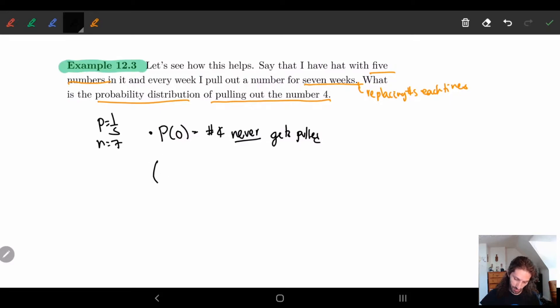The chance of four never getting pulled. Well, it's just the chance one over one minus five, seven times, right? So this is just four-fifths to the seven, because it's basically saying don't choose four seven times in a row. They're all independent events. There's a four-fifths chance for each one of these occurring. And so we get four-fifths to the seventh. And this gives us roughly 0.2097152. So already we know there's a roughly 21% chance that the number four will never show up in seven weeks.